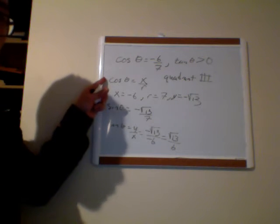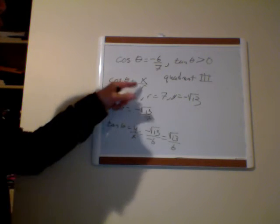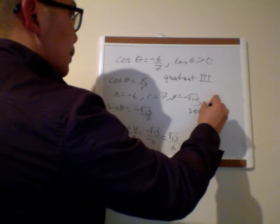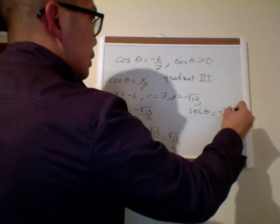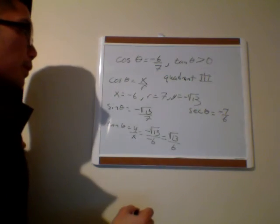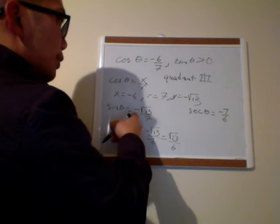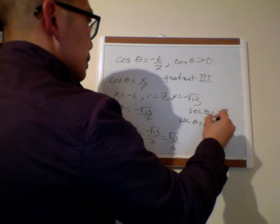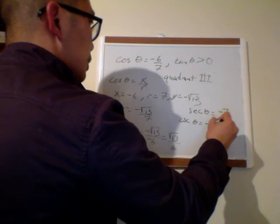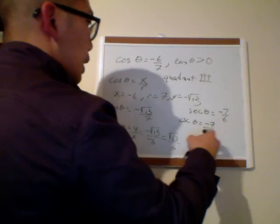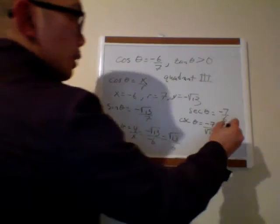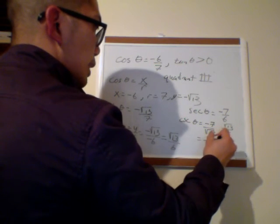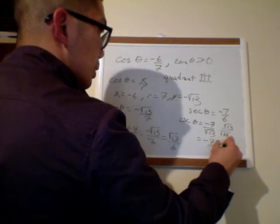Since they gave me cosine first, I'll do secant first — I just flip the cosine. So secant theta equals negative 7 over 6. My cosecant, I flip the sine, so that is negative 7 over root 13. I need to rationalize the denominator, so I multiply top and bottom by root 13. My cosecant is negative 7 root 13 over 13.